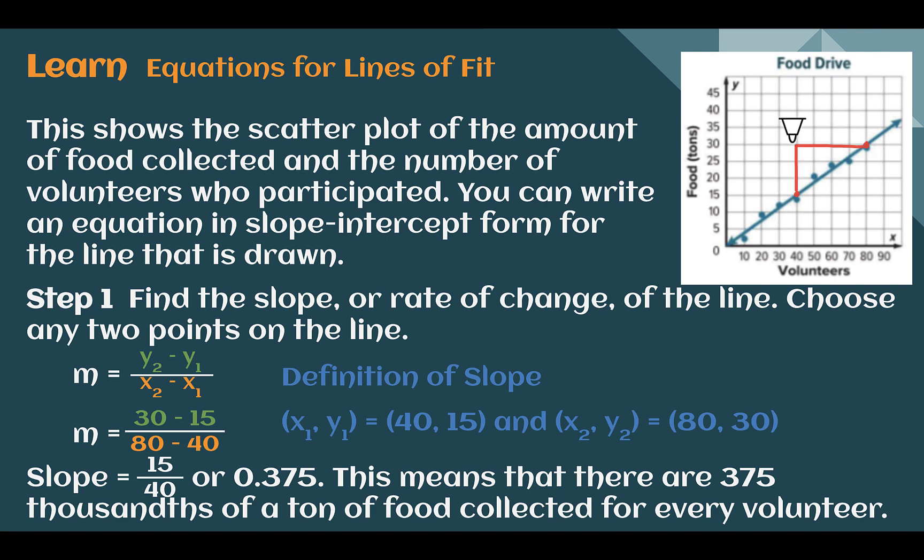So if I figure out my rise, it started at 15 and it ended at 30. That went up 15. My run, it started at 40 and ended at 80. That is 40. So 15 over 40 is my slope. I could reduce that dividing by 5 to 3/8 or I could just turn it into a decimal. And in fact, most of the slopes you're going to see in this lesson are going to be decimals. Here it's 0.375.